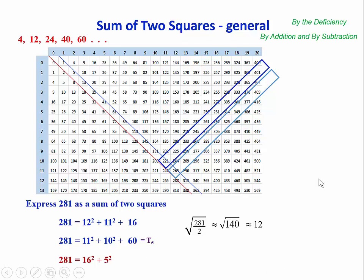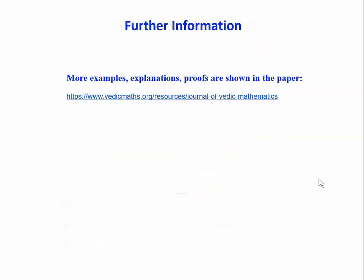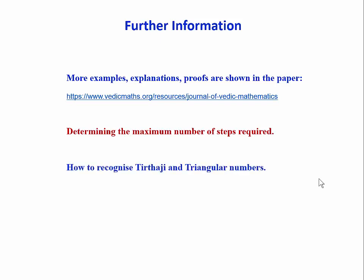Anyway, that's how it works, and it's explained more in my paper, which is available here. And you can see how to determine the number of steps required to get your answer and how to recognize the Tirthaji and triangle numbers and where they are in the sequence and how we can work alternatively with the red diagonal instead of the blue one.